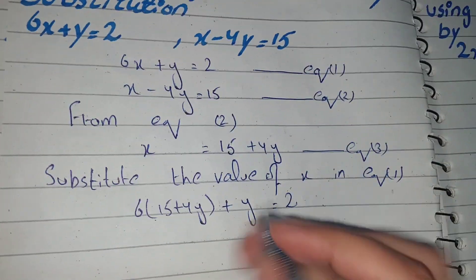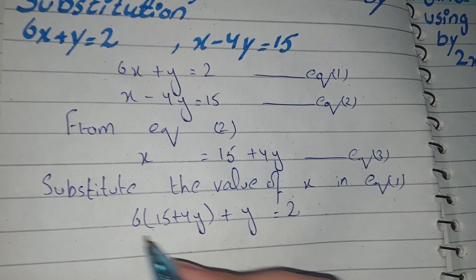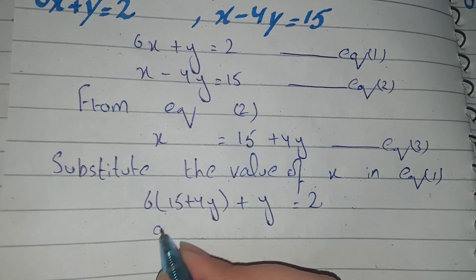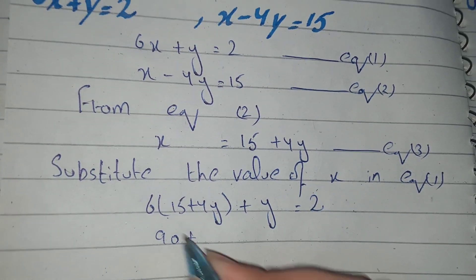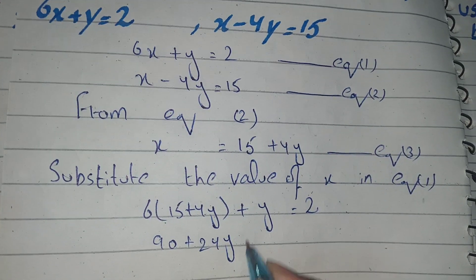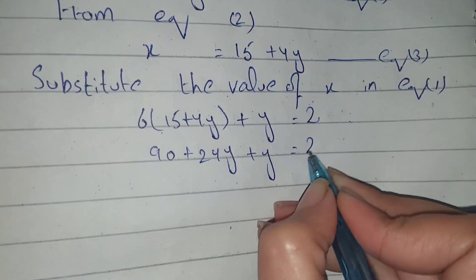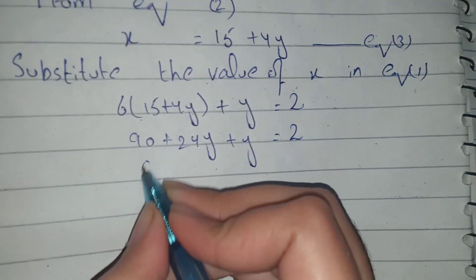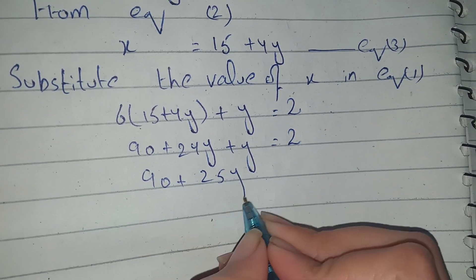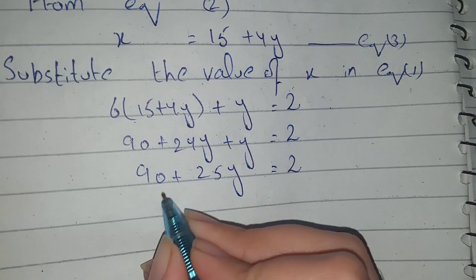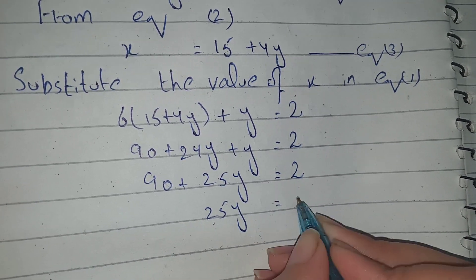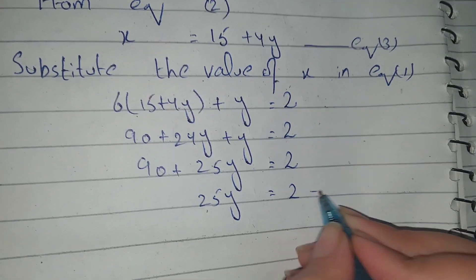Now what will we do? We multiply out and simplify. And here y is equal to 2. We have a minus, and we continue to simplify.